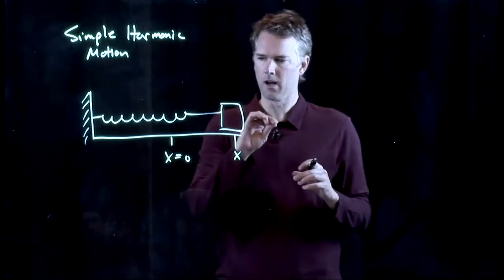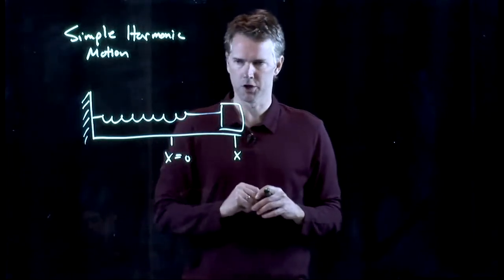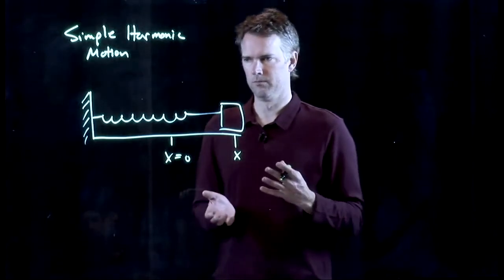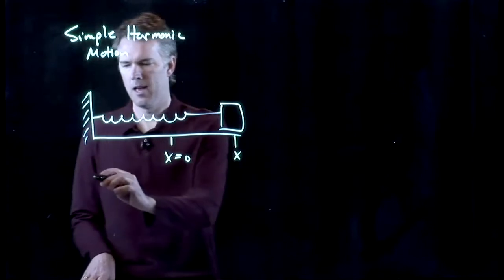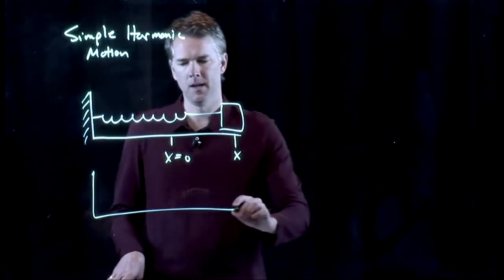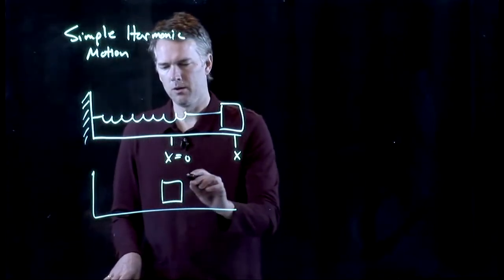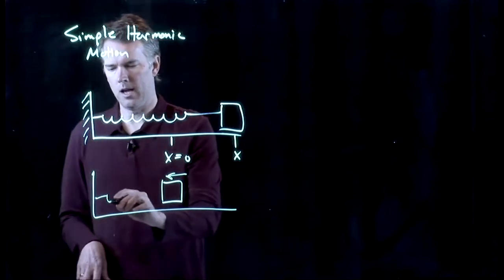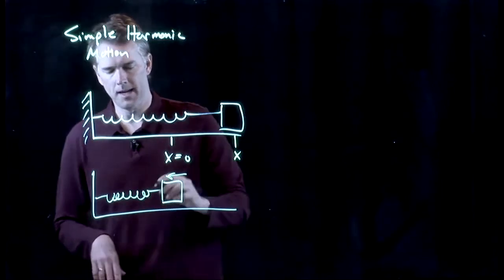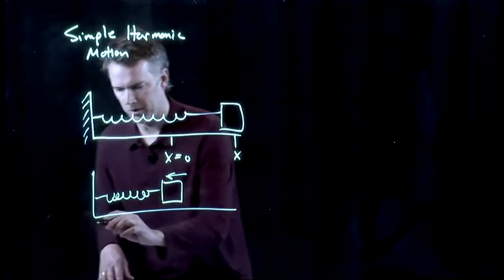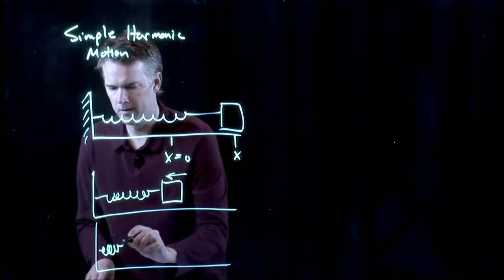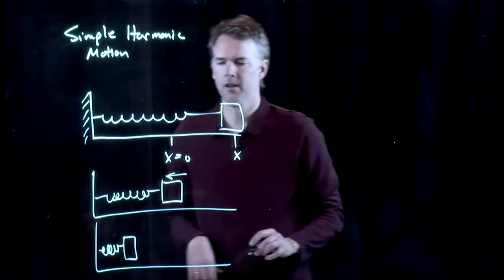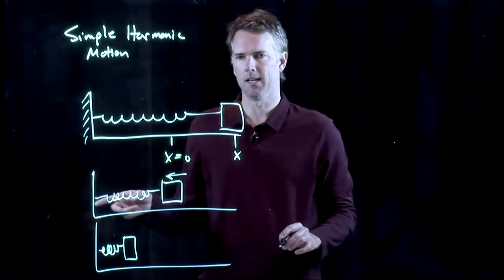When I let this block go and we're ignoring any friction here, what does it do? We know what it's going to do. It's going to start moving that way. And at some later time, it's going to be cruising to the left and the spring will be at equilibrium. And then at some later time, it will compress the spring and it will come back to rest. And then it will do that again and again and again.